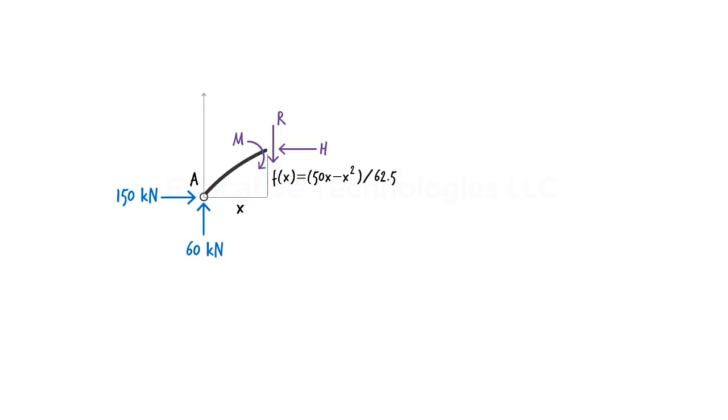This free body diagram involves three unknown forces: m, h, and r. We can determine m by writing the sum of the moments about the cut point. Here is the equation. Solving it for m gives... As the equation suggests, bending moment in the arch varies as a function of x in a nonlinear manner.